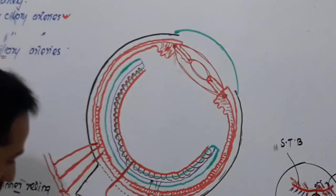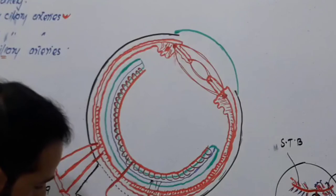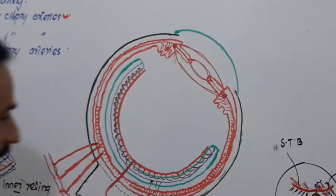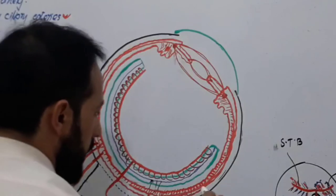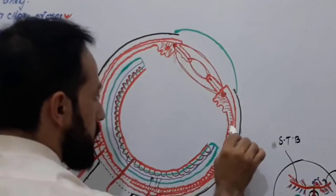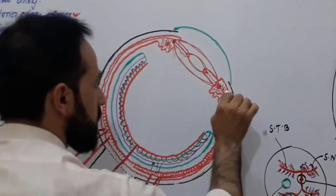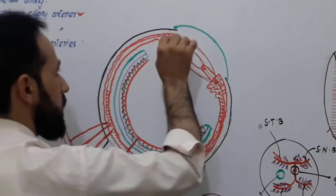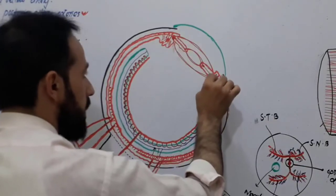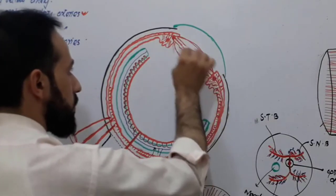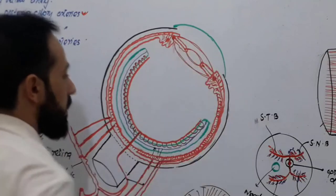So to summarize: the long posterior ciliary artery gives branches in the choroid, supplies the ciliary body and ciliary muscles, forms the major arterial ring, and then its branches enter the iris to form the minor arterial ring.